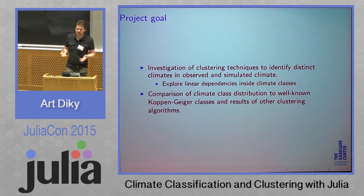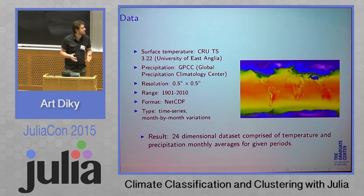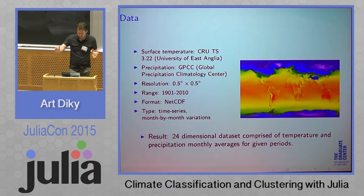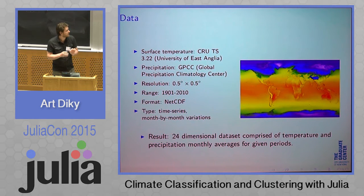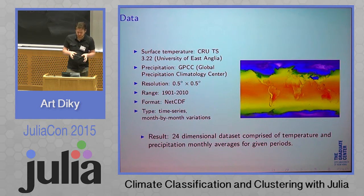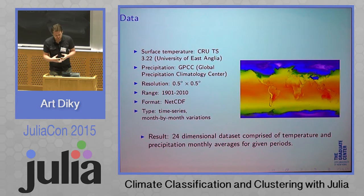We grabbed publicly available, large datasets. The time span of the data is hundreds of years — covering roughly the last century with very precise resolution. We have grids on a worldwide map at half-degree by half-degree resolution, and it's a time series. There are many different datasets, and we picked up the month-by-month variation of these climate parameters.